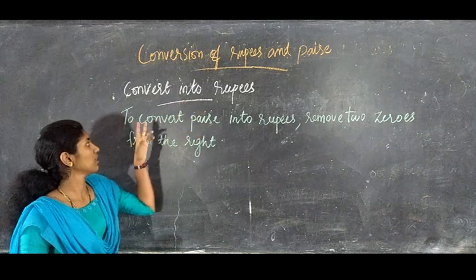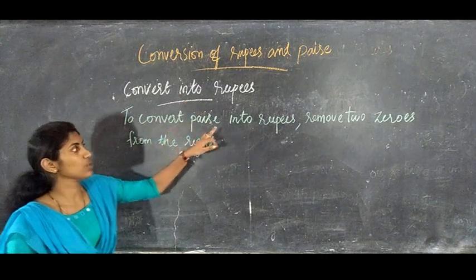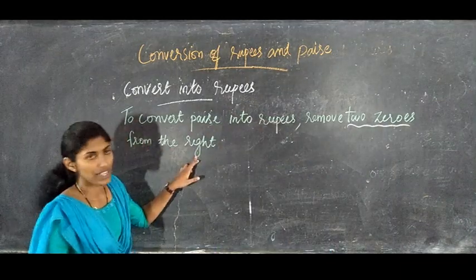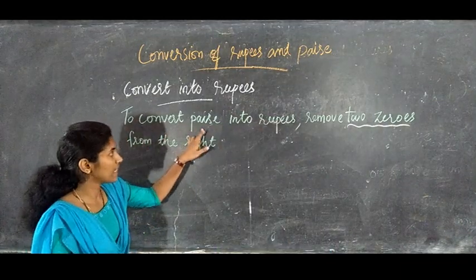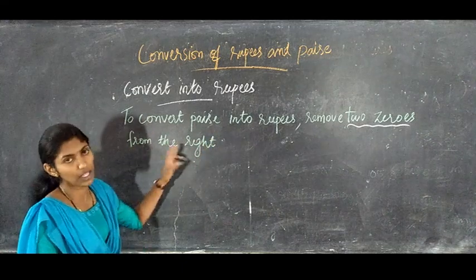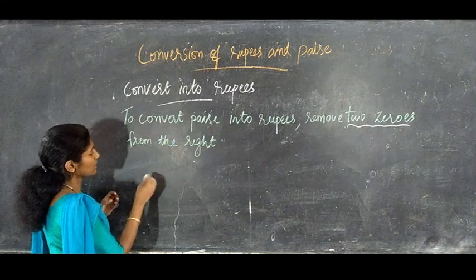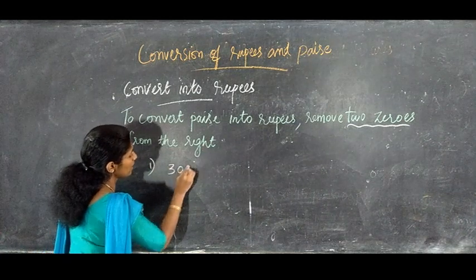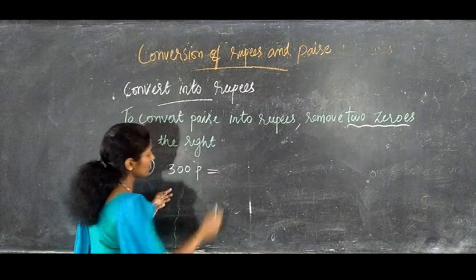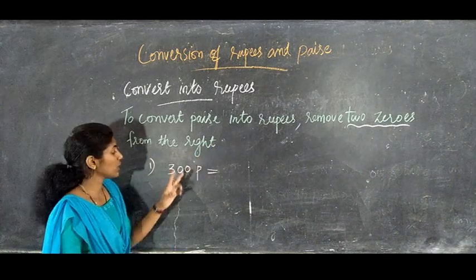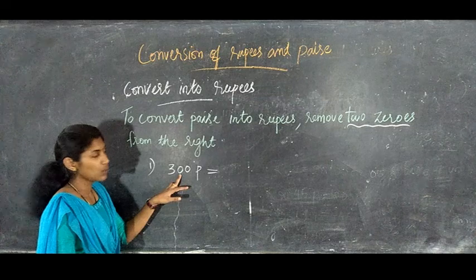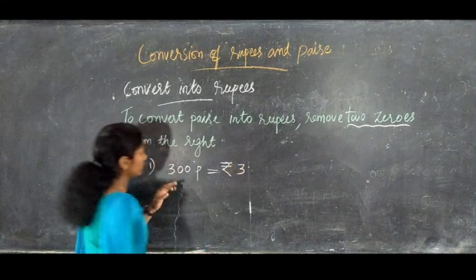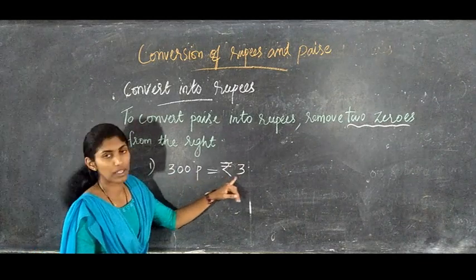Next conversion: converting paisa into rupees. To convert paisa to rupees, we have to remove 2 zeros from the right. For example, 300 paisa — we remove the 2 zeros, giving us 3, so 300 paisa equals rupees 3. Next, 1400 paisa — we remove the 2 zeros, giving us 14, so 1400 paisa equals rupees 14.